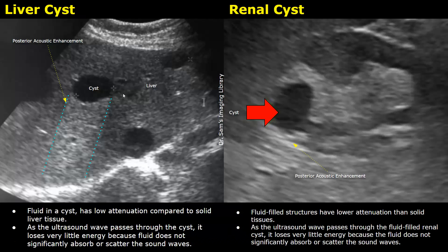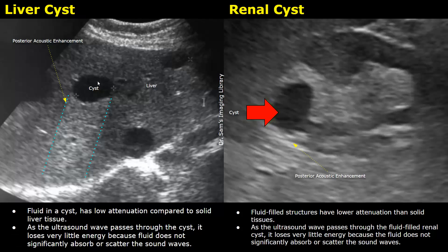The image on the left is of simple liver cysts. Anechoic cysts have bright posterior acoustic enhancement. Ultrasound waves passing through anechoic fluid lose less energy compared to when they pass through solid liver tissue. More ultrasound energy is lost in the liver tissue while very little energy is lost in the cyst. The same phenomenon applies to a renal cyst.